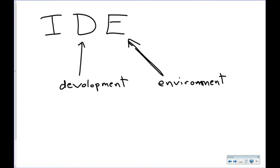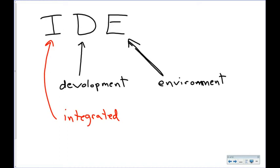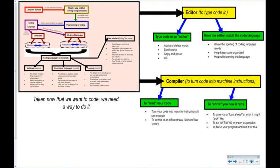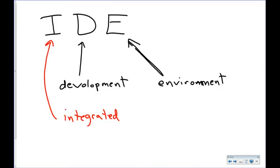But what's the I? It actually stands for 'integrated.' What does the word integrated mean? To bring things together — you're integrating them. What we're bringing together is an editor and a compiler. That's what IDE stands for: Integrated Development Environment. That is what we're going to begin.